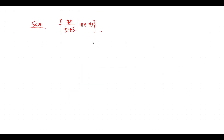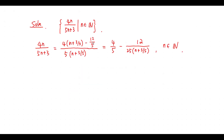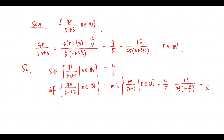Consider this set. We write this set equals this one. From this, we see that the supremum of this set equals 4 over 5. The infimum of this set equals 1 over 2.